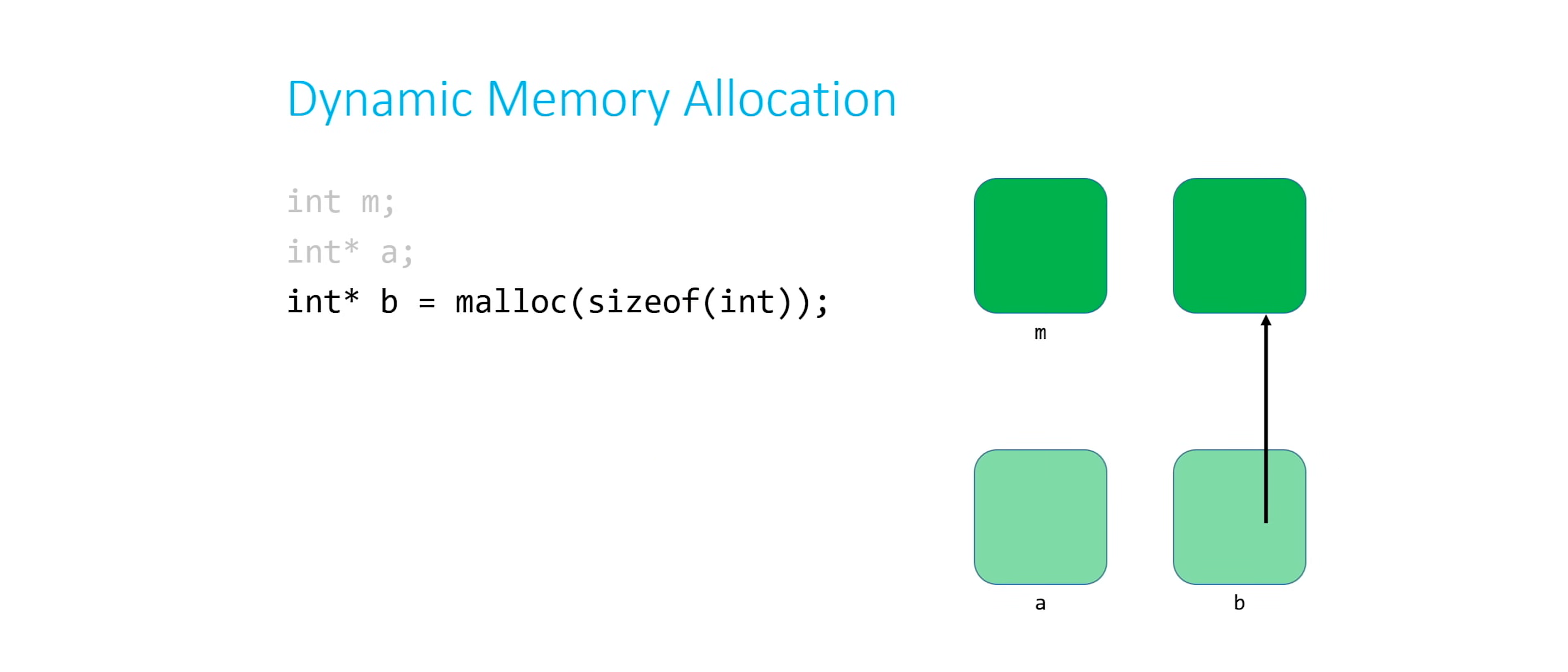And so what actually happens sort of visually is this. Notice that the actual integer I didn't give a name to. I don't have a name for it. That's one way, typically, that I know I don't have a statically declared integer. The only way that I can refer to that green box is by dereferencing the pointer called b. So b has a name. That's statically declared. But I dereference b in order to get to this dynamically allocated memory.